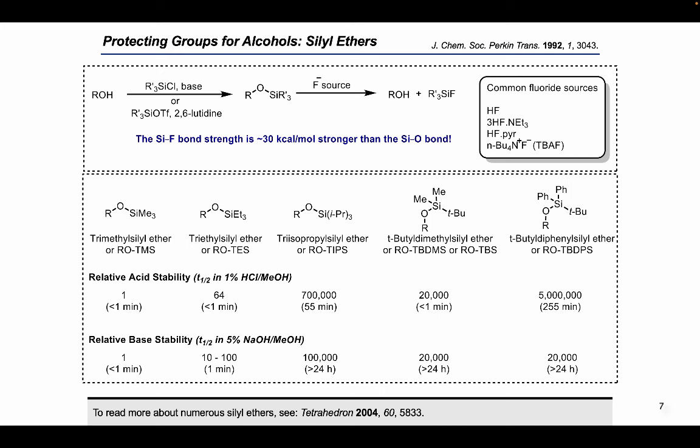Silyl ethers are among the most frequently used protective groups for alcohols. Their reactivity — both formation and cleavage — can be modulated by a suitable choice of substituents on the silicon atom. Both steric and electronic effects regulate the ease of cleavage in multiply functionalized substrates and hence should be considered in planning selective deprotection. Alcohols can easily be converted to silyl ethers by reaction with trialkylsilyl chlorides in the presence of an amine base. They are easily cleaved by exposure to fluoride ion, which is attributed to the high affinity that fluoride ion has for silicon. The reported half-lives vary as a function of environment and acid or base concentration but serve to define relative stabilities of these silyl groups.